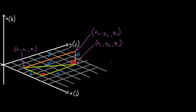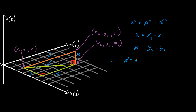So let's begin finding it. By looking at the diagram, we can say that lambda squared plus mu squared equals small d squared. Now, the length lambda is actually x2 minus x1, and the length mu is y2 minus y1. Therefore, d squared equals (x2 minus x1) squared plus (y2 minus y1) squared.